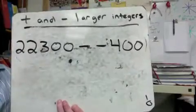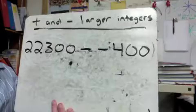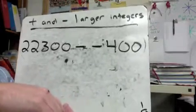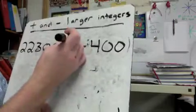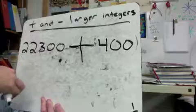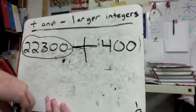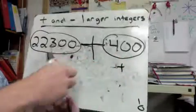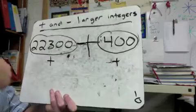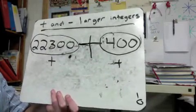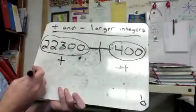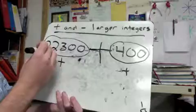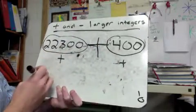Last example: 22,300 minus negative 400. I need to set this up — I've got two negatives, which make a big plus. Now I have 22,300 positives and 400 positives. Since everything is positive, there's nothing to cancel — you don't cancel a positive with a positive. So I just add the positives together: 22,300 plus 400 is 22,700, and my answer is positive 22,700.